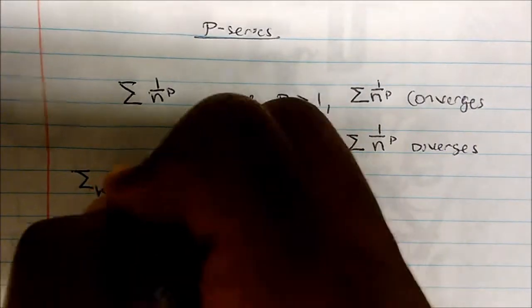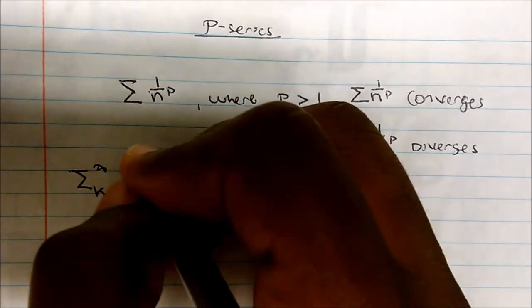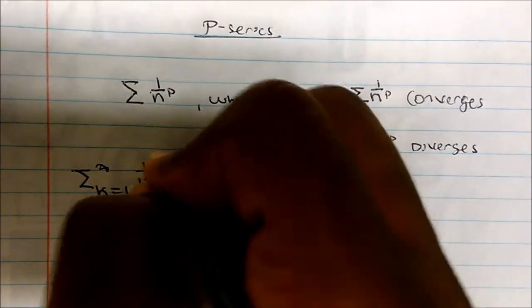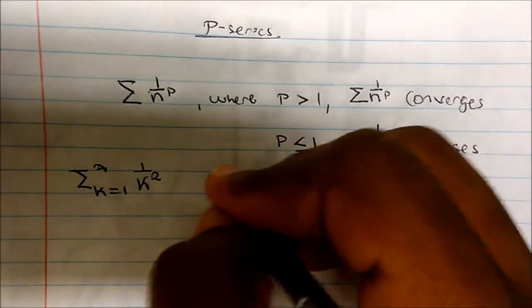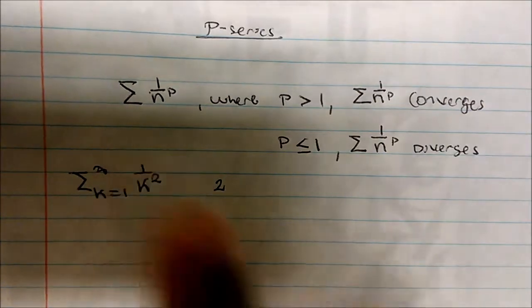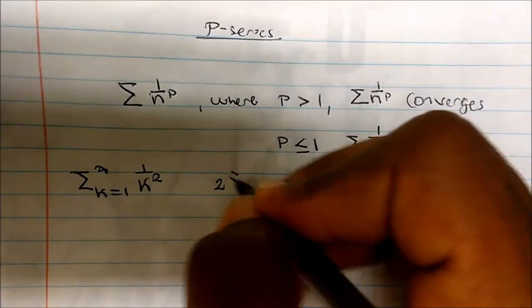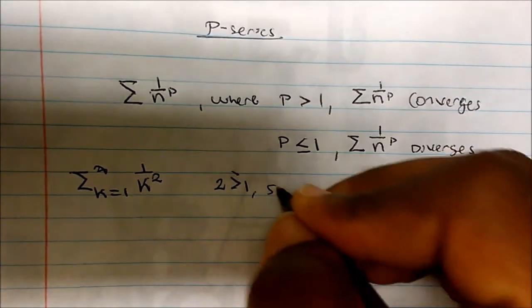What if we have the sum where k equals one to infinity of one over k squared? Well, P equals two, and since two is greater than one, the series converges.